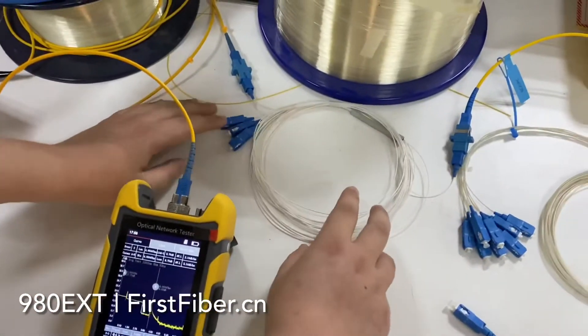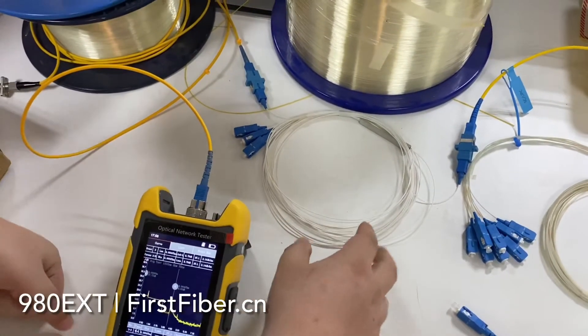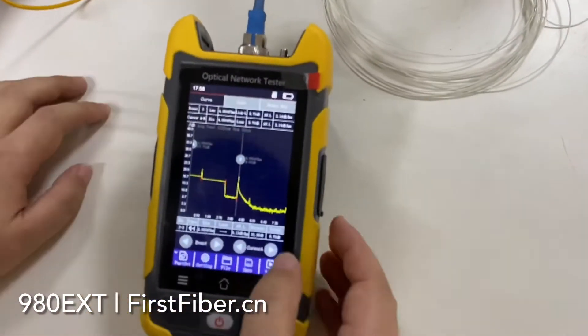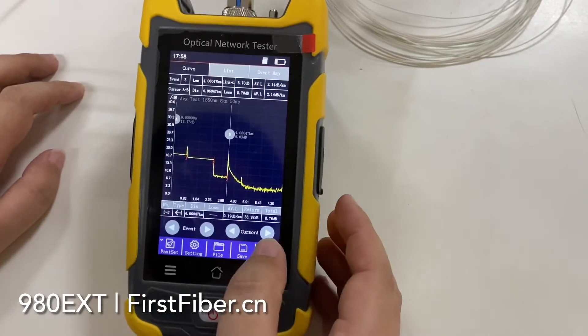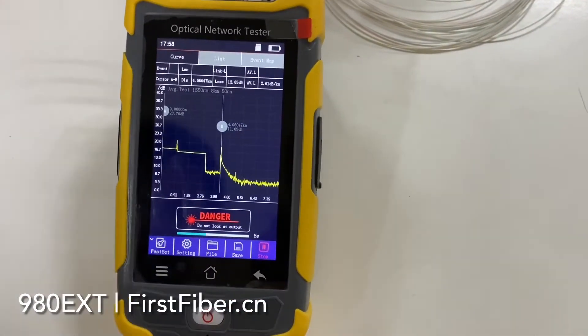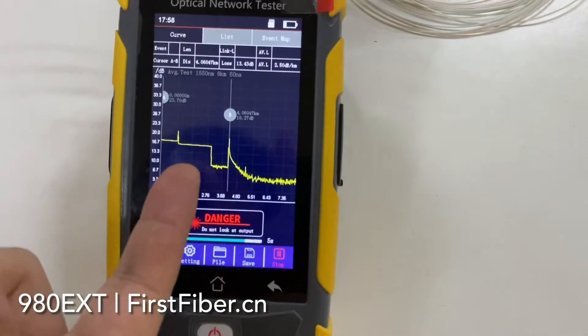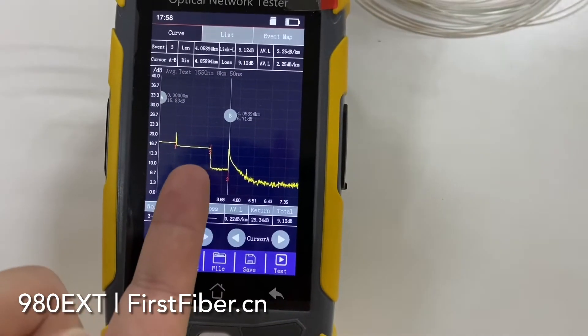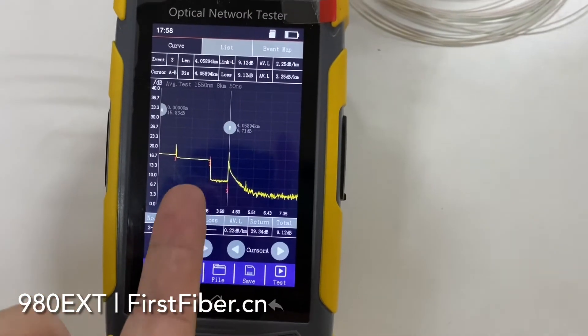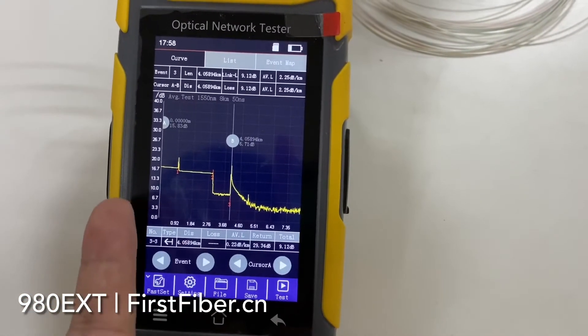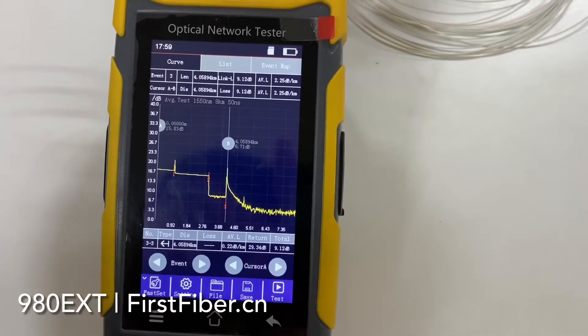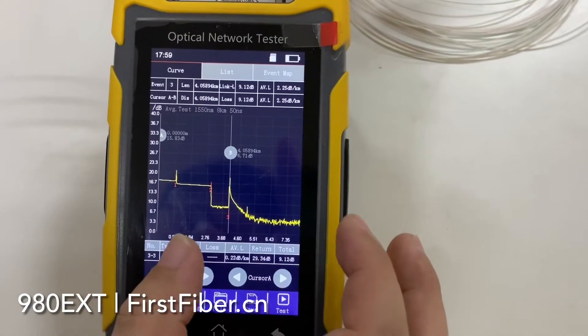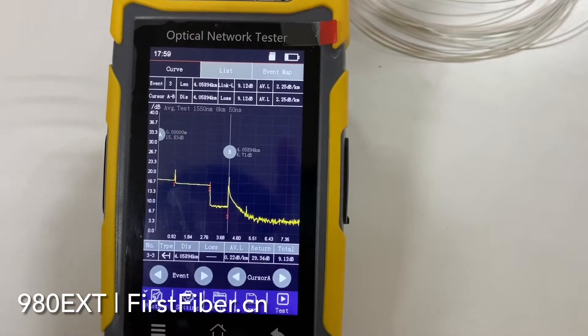The 4-channel splitters have been connected in the fiber links, so I just press this button to make the test. As you can see, here is a drop. The drop point is the splitter point. So, the splitter was displayed on the OTDR curves.